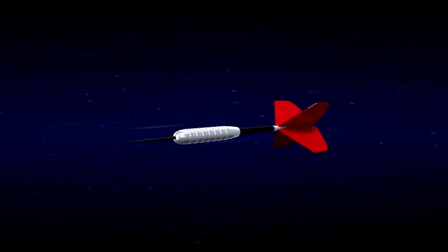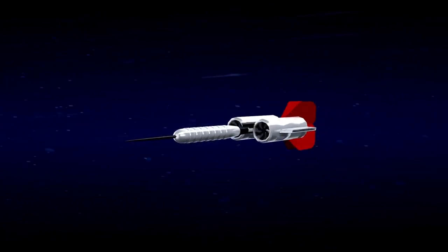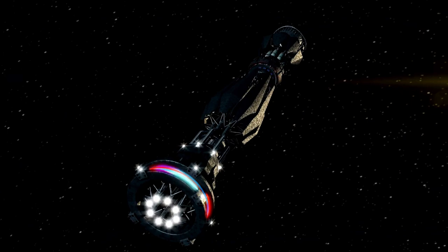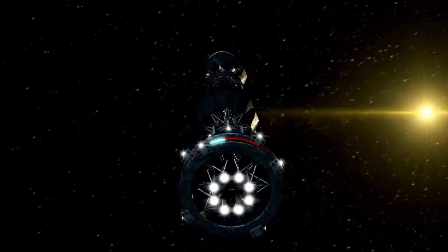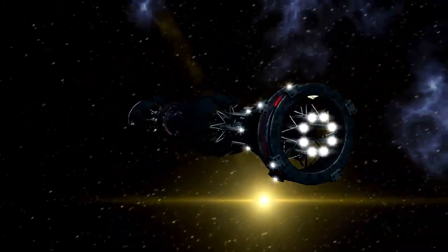In 1977, NASA launched two spacecraft, Voyager 1 and Voyager 2, on a mission like no other to explore the farthest corners of our solar system and beyond.